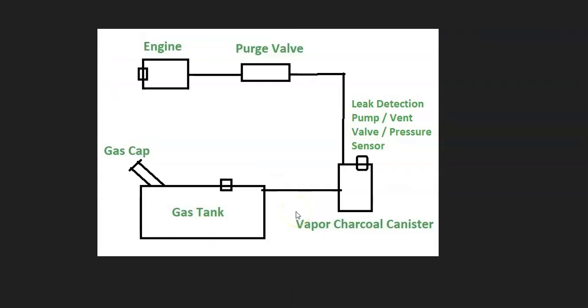And so the basics of what's going on inside of the EVAP system is that the gas vapors are going to leave the gas tank. They're going to go through a hose over to what's called the charcoal canister. And the charcoal canister is basically like storage for the gas vapors. And somewhere on or near the charcoal canister is going to be what's called a leak detection pump. And this leak detection pump quite often also contains the vent valve and the pressure sensor. So sometimes those words can be used interchangeably.